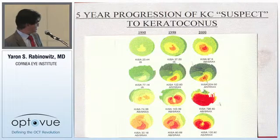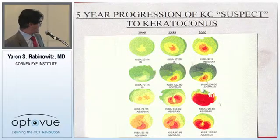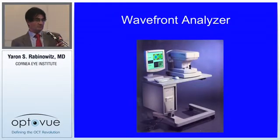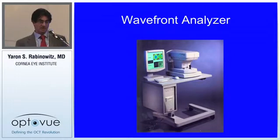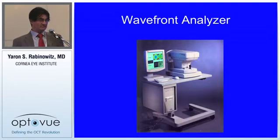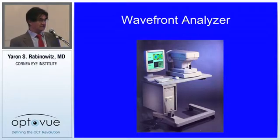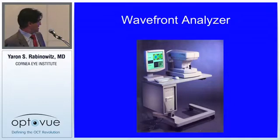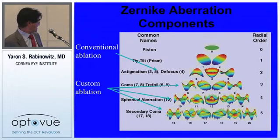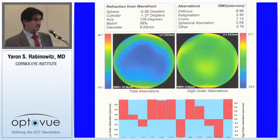Following patients over time, the KISA percentage index worsened as the pattern progressed from inferior steepening to asymmetric bowtie with skewed radial axis. We still use topography as the main device. But for cases with inferior steepening where uncertainty remains, we looked to wavefront analysis and found that a Zernike polynomial called coma was useful for detecting early forms of keratoconus.